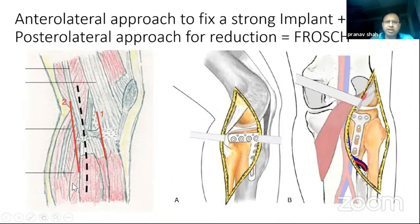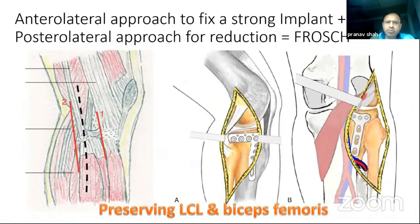The head of the fibula is the most important landmark. This approach was devised because previously fibular head osteotomy was performed to expose the lateral condyle, which was found to be very damaging — with many problems including peroneal nerve involvement. By preserving the lateral collateral ligament and biceps femoris attachment, we can approach the entire condyle with the Frosch approach.